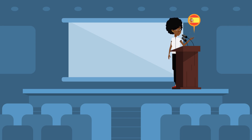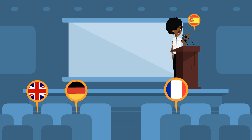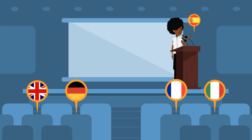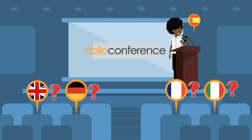Ablio Conference is an effective and convenient solution whenever you run an event where some audiences don't understand the language of the speakers and you need to organize some sort of simultaneous translation.